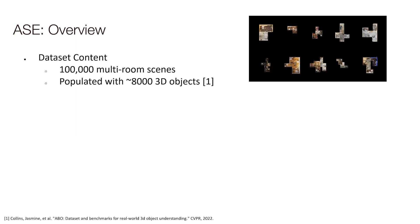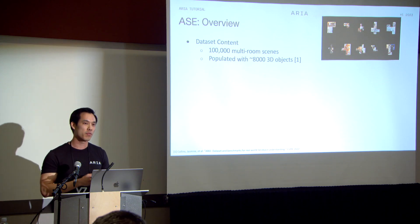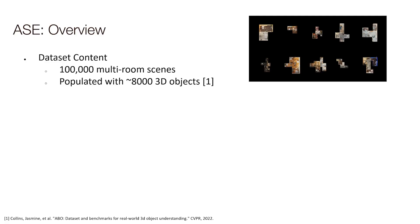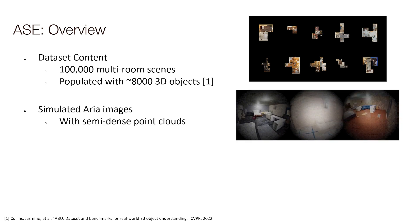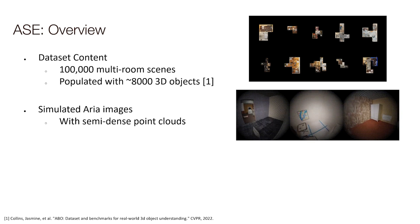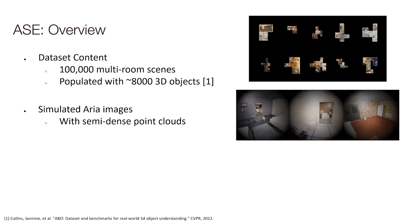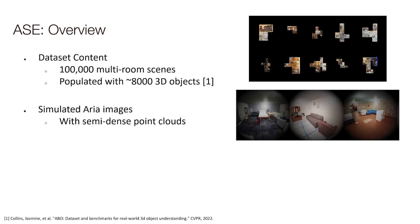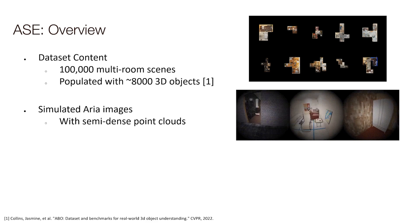So let's take a look at what the dataset contains. There are 100,000 unique multi-room scenes, each populated with 3D objects from the Amazon Berkeley dataset released at last year's CVPR - household objects if you look closely. For each scene, we simulate an agent walking around the entire scene and render sensor data from a Project ARIA rig at a 10-hertz frame rate. We're showing the RGB stream of the simulated agent walking around the house. We also simulate IMUs and SLAM cameras, and because we have this simulated ARIA recording, we can plug it through our machine perception services pipeline to get semi-dense point cloud representations.